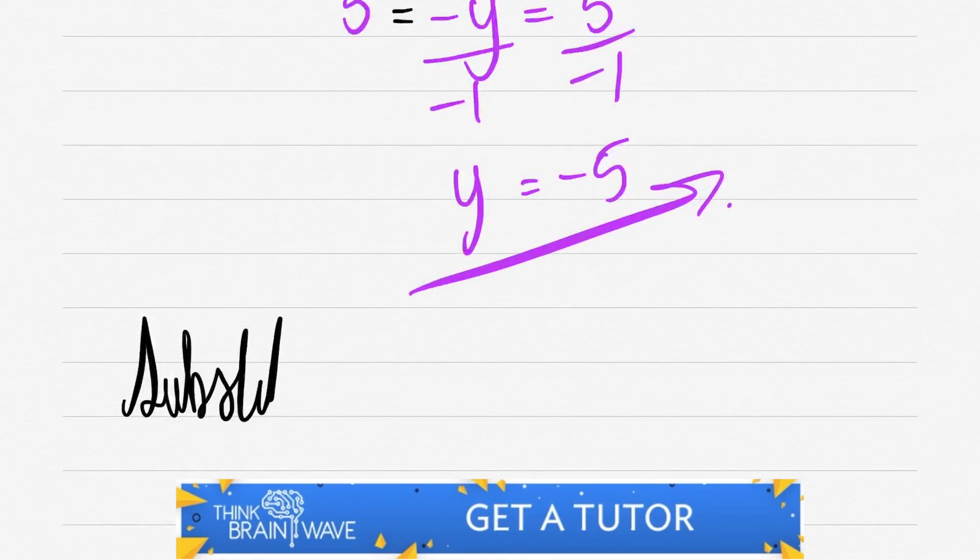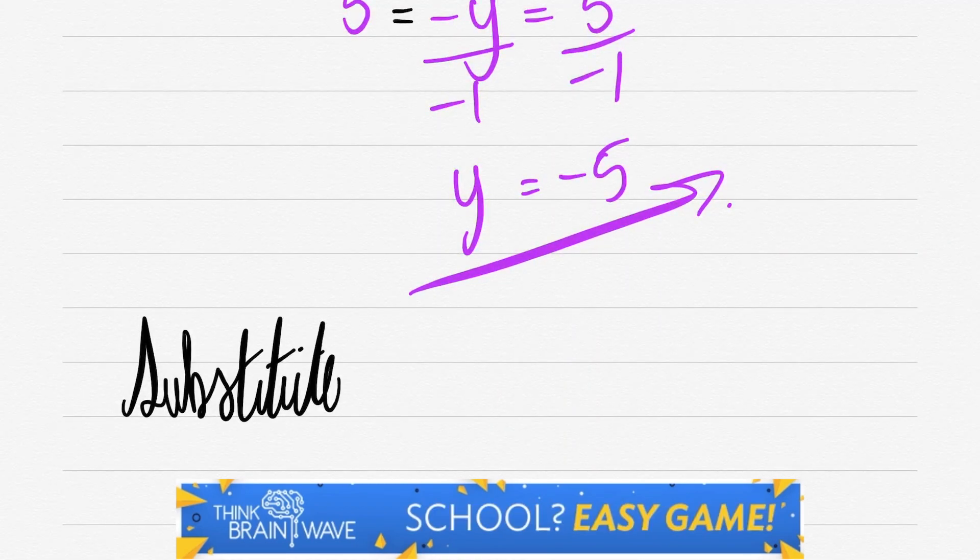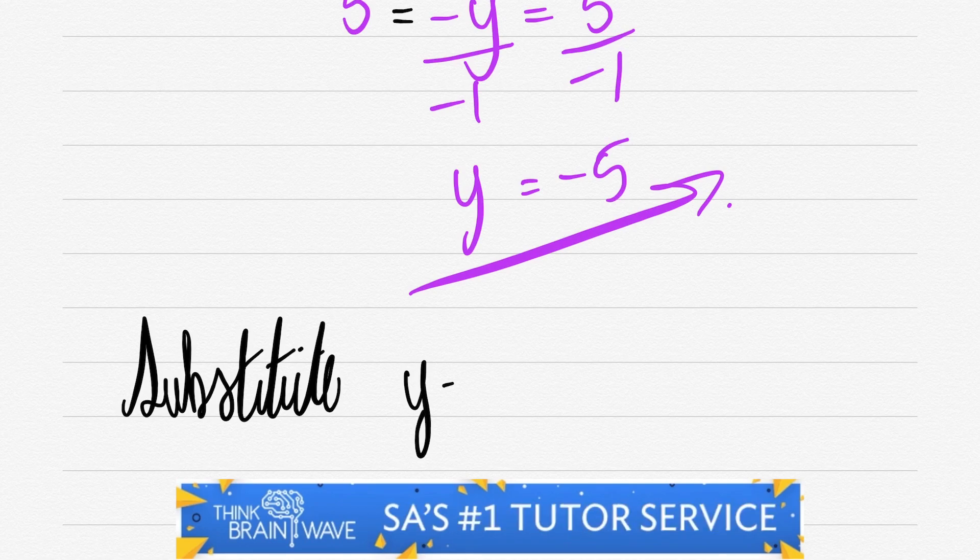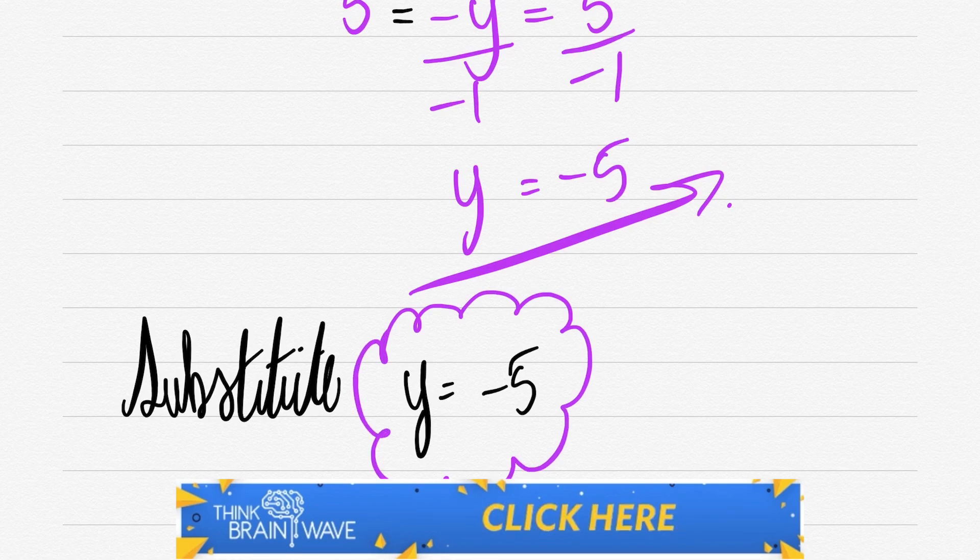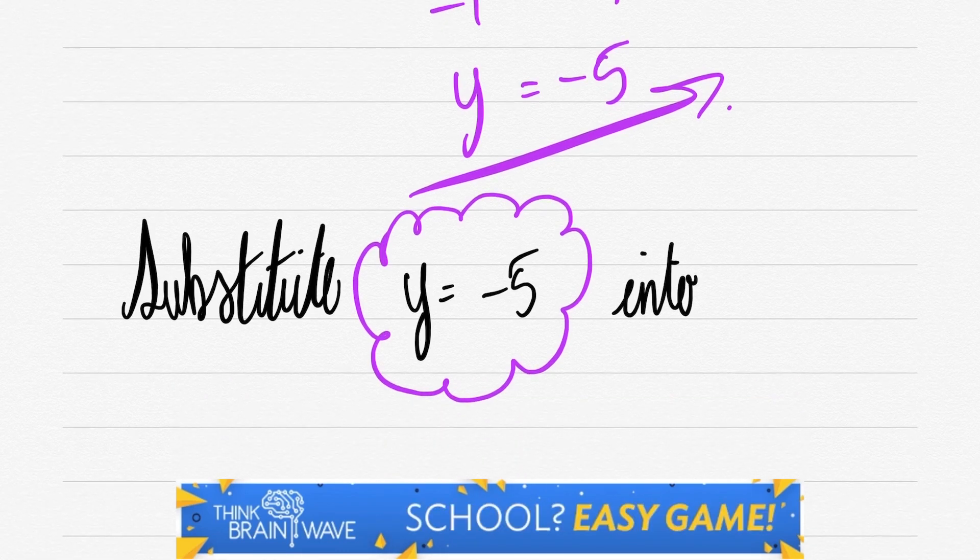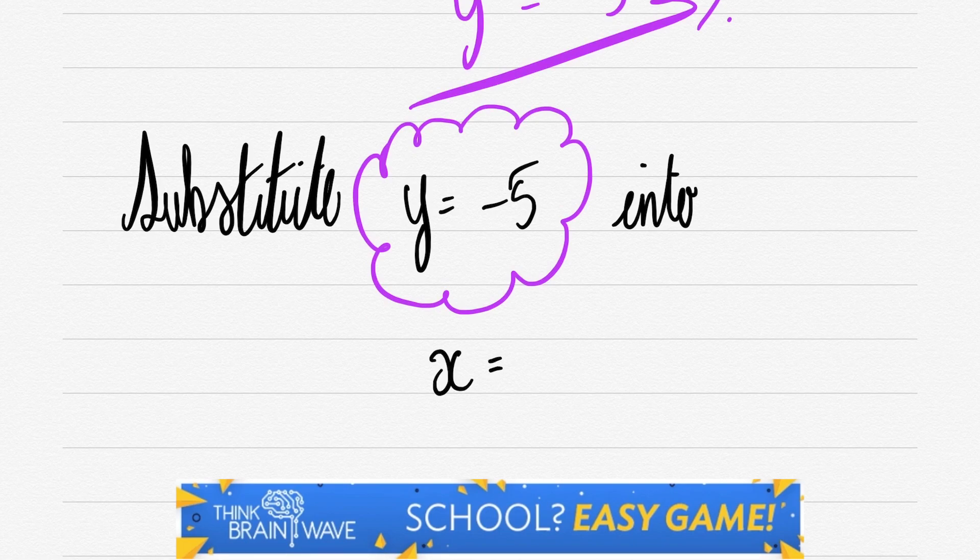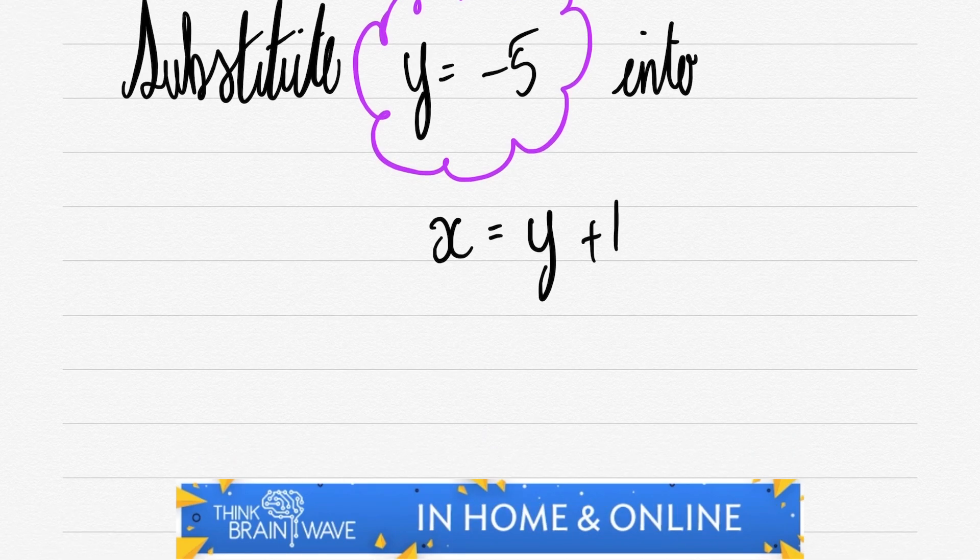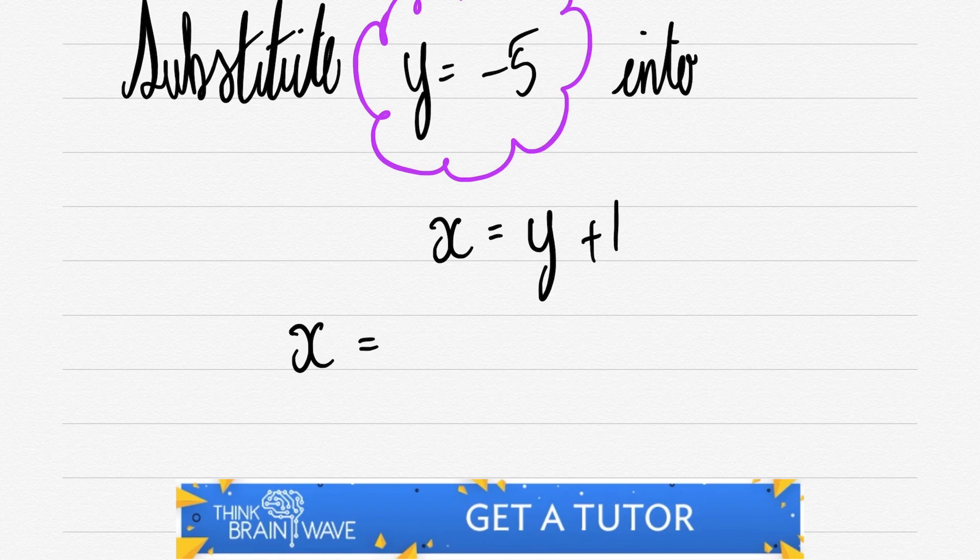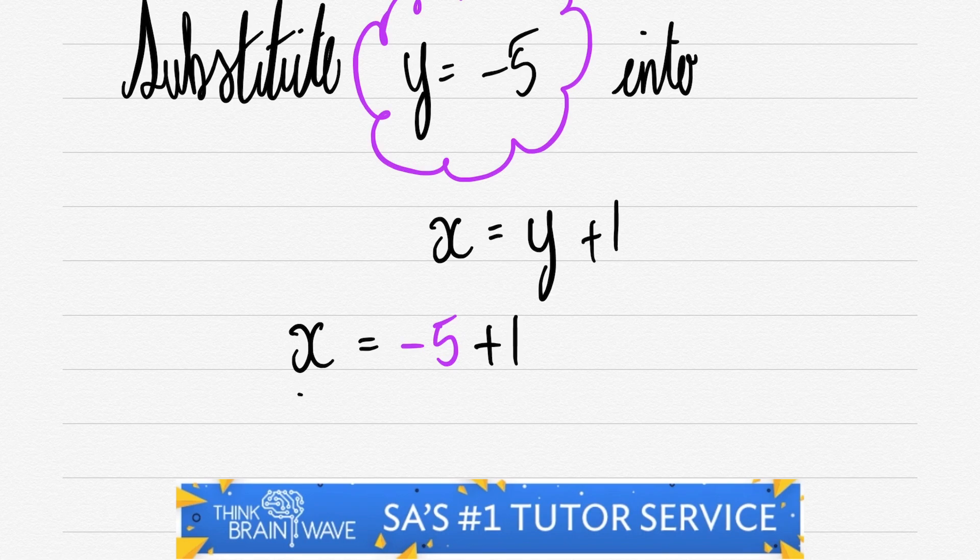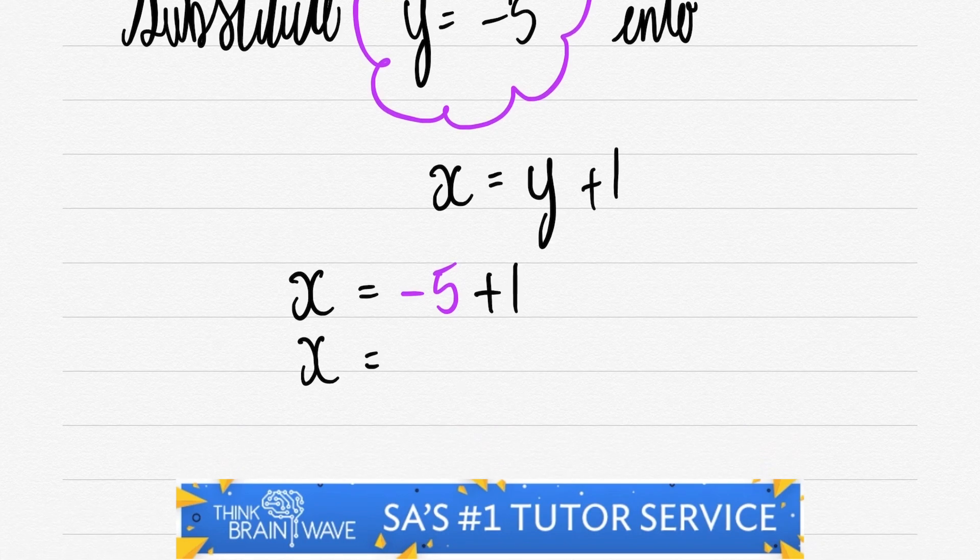Now let's substitute this value back in to where we have x = 1 + y. That was the first term that we managed to somewhat solve as you can remember above. So we have y = -5. Let's sub that into x = y + 1. We say x = -5 + 1. Minus five plus one is equal to -4.